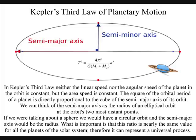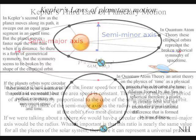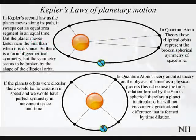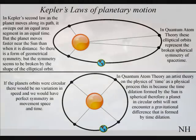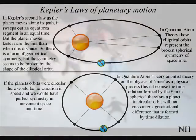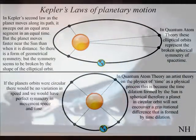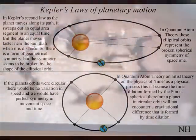If we were talking about a sphere we would have a circular orbit and the semi-major axis would be the radius. What is important is that this ratio is nearly the same value for all the planets of the solar system, therefore it can represent a universal process.